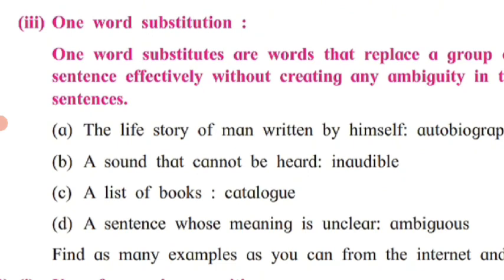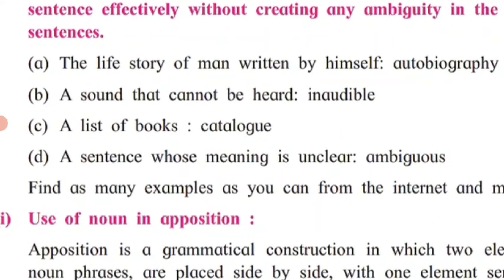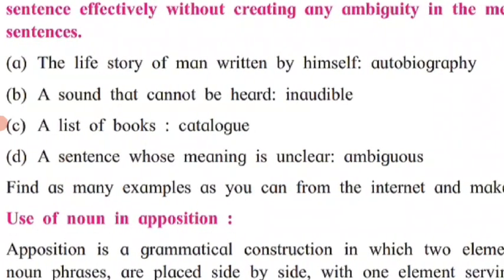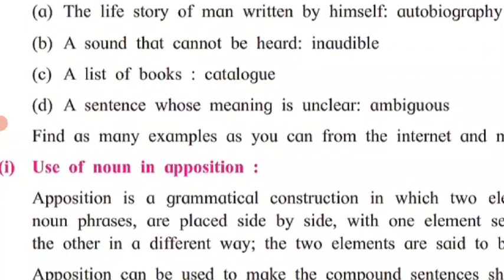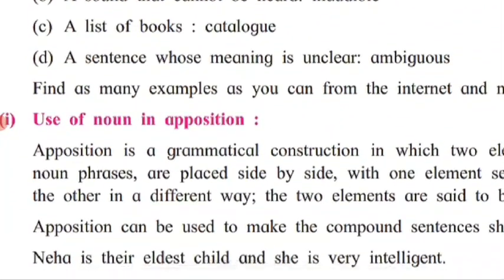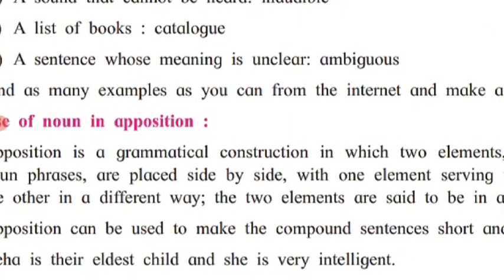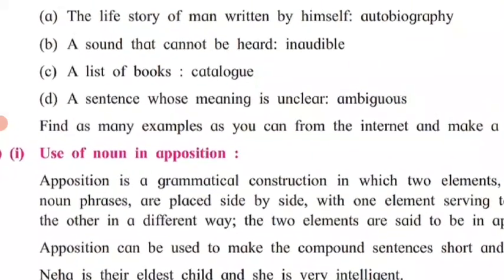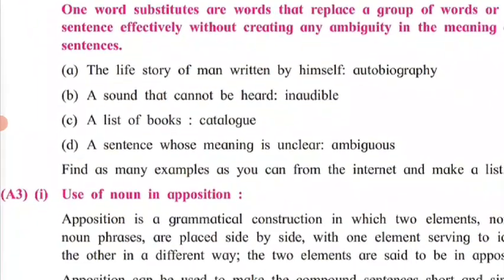Then, a very important thing: how you can use one-word substitution for a number of words together or a phrase. 'The life story of a man written by himself' — this entire expression has just one word: 'autobiography.' 'A sound that cannot be heard' is 'inaudible.' 'A list of books' is called a 'catalog.' 'A sentence whose meaning is unclear' is 'ambiguous.' All such expressions can have a single word to serve the message. That is why one-word substitution is one of the best methods of curtailing or shortening sentences. Please apply it wherever possible.